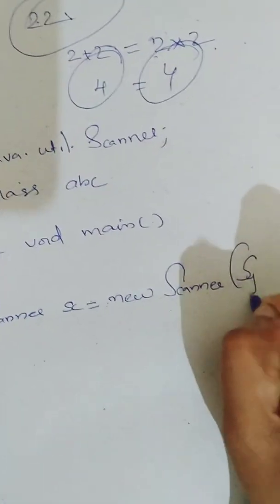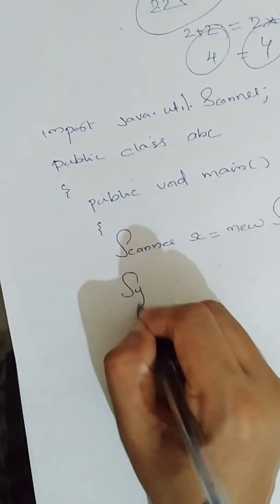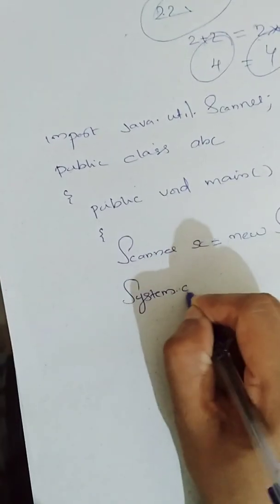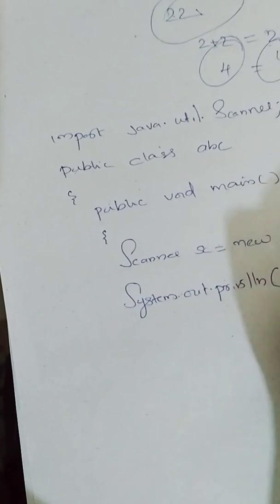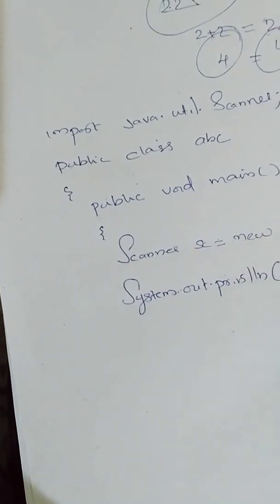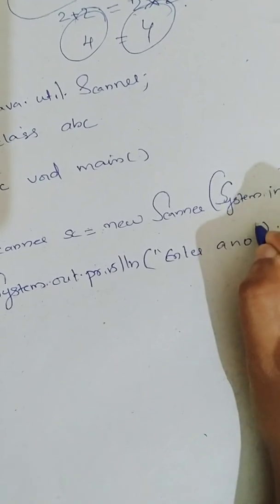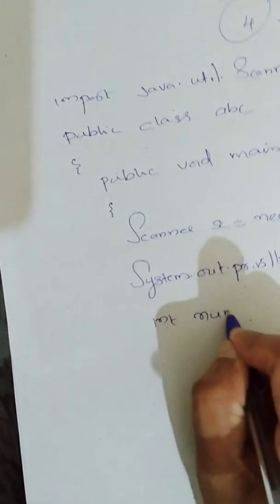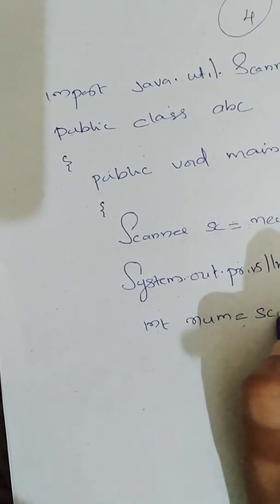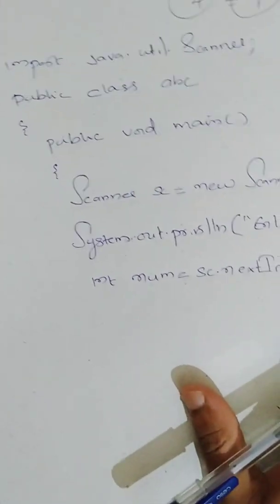You will create an object of Scanner. Scanner sc is equal to new Scanner, then system.in semicolon. Next, you will prompt the user to enter a number. So system.out.println enter a number. Then int num is equal to sc.nextInt for accepting an integer.